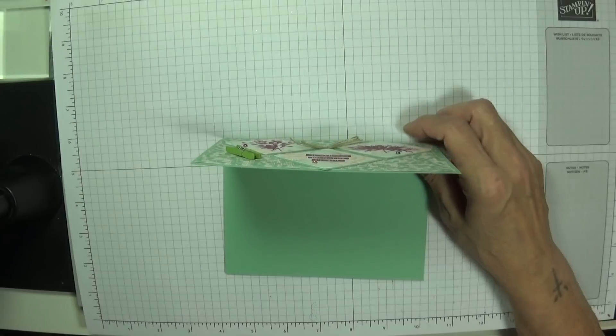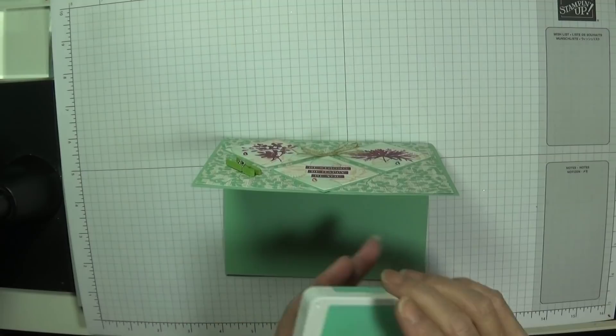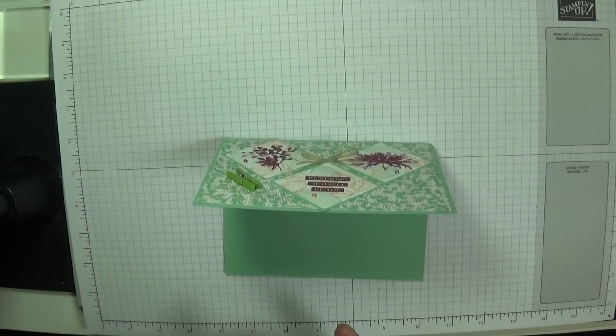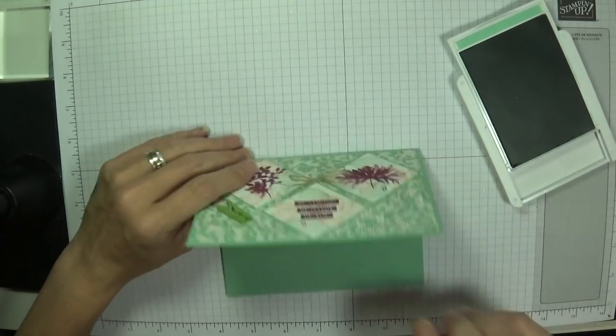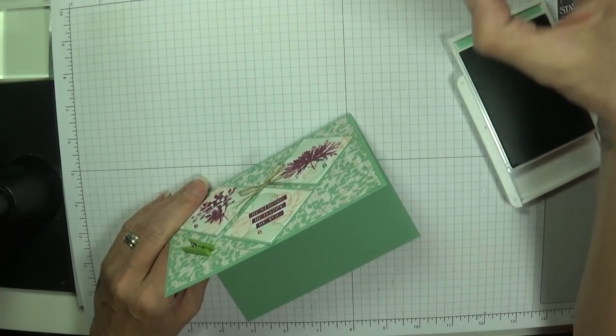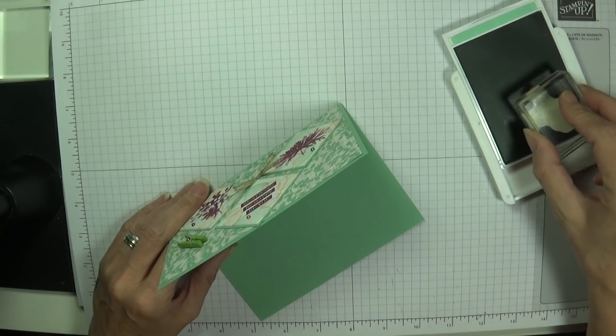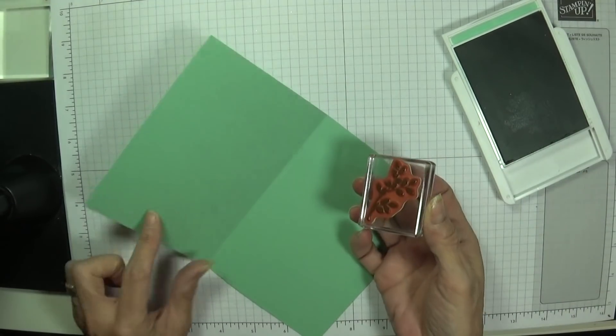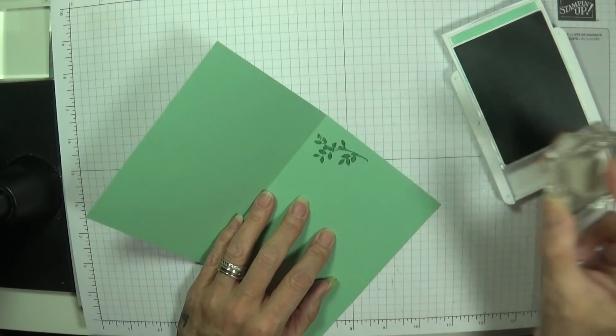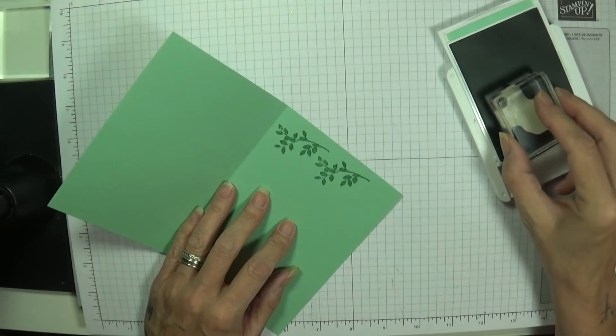I might do a bit of two-tone actually, very quickly. My mint macaron and I'm just going to add, what can I add? Because we've used this on the front.